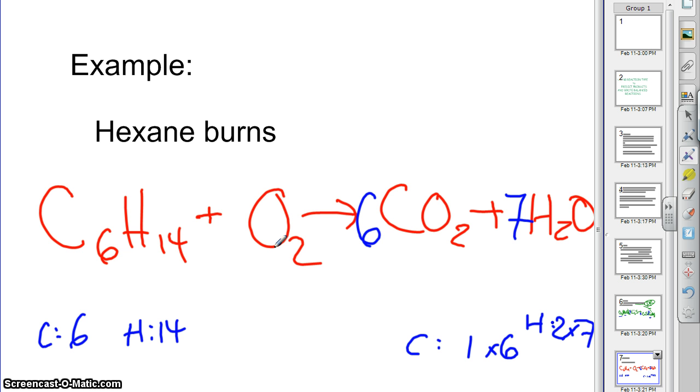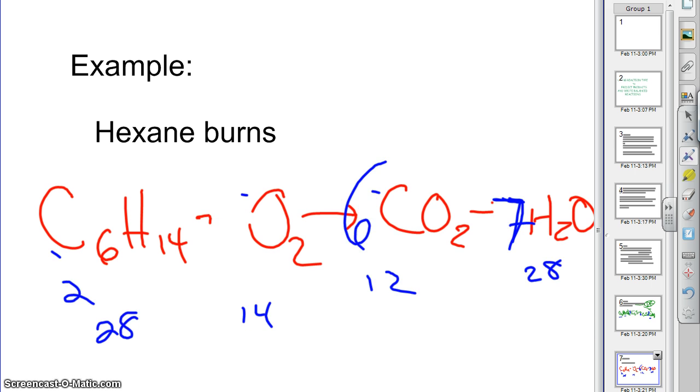On the left I have 2. On the right I have 12 here, 6 times 2, but I've also got 7 more over here. So 12 and 7 is 19. So what can I multiply this 2 by to get 19?